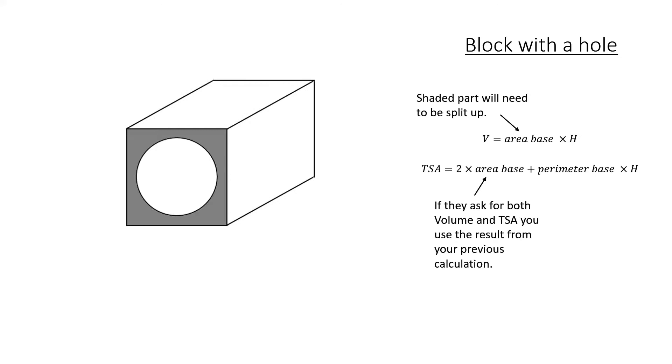Where this gets a bit different, we need to take once again the shaded part that will need to be split up. We're going to have a square with the circle cut out of it. If they give you a square hole, then just use a square instead. And then we've also got our area of base, which we can repeat in both of our calculations.